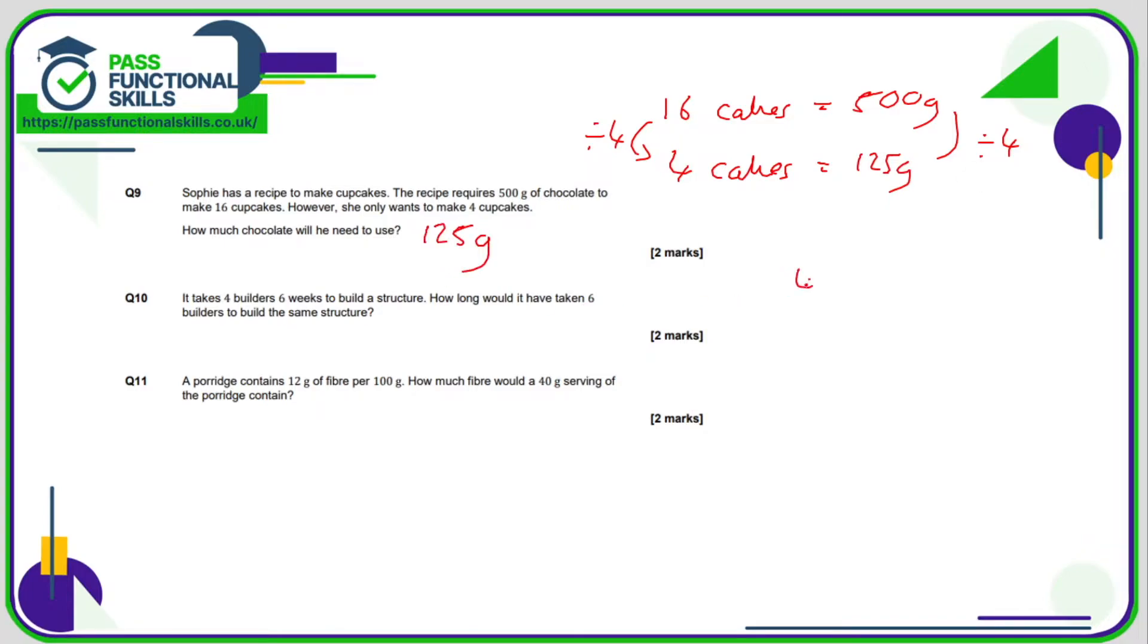Question number ten. Four builders takes six weeks, and we want to know how long it would take six builders. We've got more people working, so it's going to take less time. It's difficult going from four to six, so I'm going to work out how long it would take one builder. One builder would take four times as long, so that would be 24 weeks. If one builder takes 24 weeks, then six builders will take six times less. 24 divided by six is four weeks.